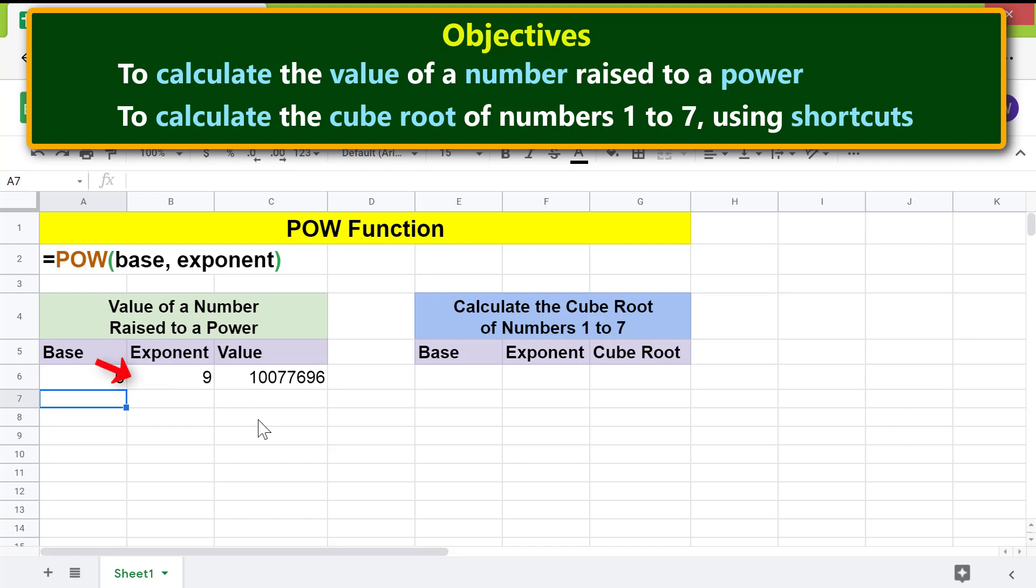Now let's enter a decimal number for the exponent and press enter. All right, POW has returned the value.